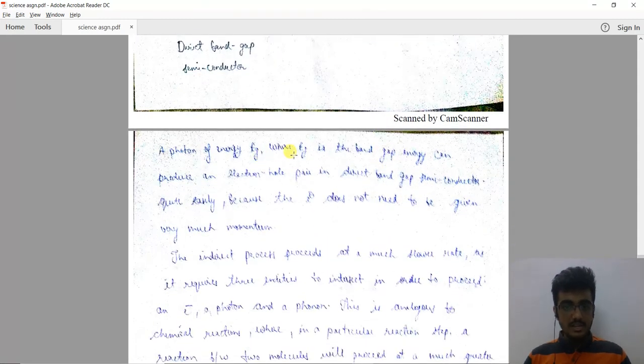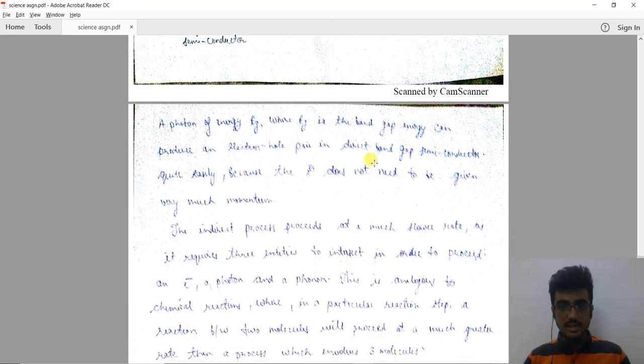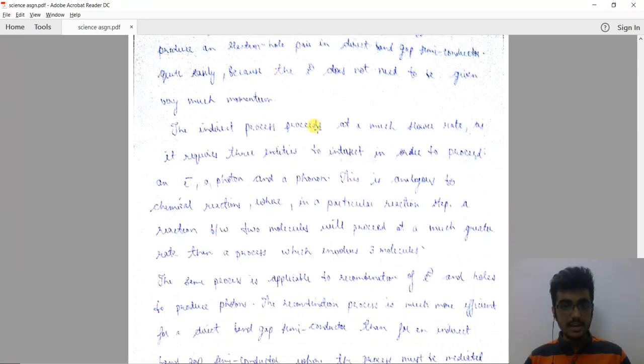A photon of energy Eg, where Eg is the band gap energy, can produce an electron-hole pair in a direct band gap semiconductor quite easily because the electron does not need to be given very much momentum. The indirect process proceeds at a much slower rate.